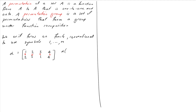This is shorthand for saying alpha of 1 equals 2, alpha of 2 equals 3, and alpha of 4 equals 4. Remember, a permutation is really just a one-to-one and onto function. Notice that 4 got left where it is — that's perfectly fine. Each number appears in both rows of the table, which is what makes it one-to-one and onto.